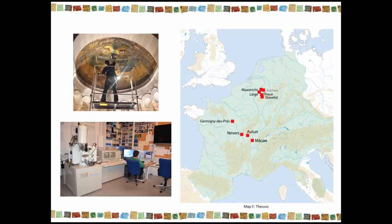During postdoctoral fellowships, I had the great chance to study several sets of tesserae coming from two main areas, one over here and one in the center of France. And these tesserae from Maastricht, Teux, Stavelot, Liège, Mâcon, Hautvillers, Nevers, and Germigny-des-Prés were at first studied with macroscopic observation and then analyzed when it was possible in laboratory.